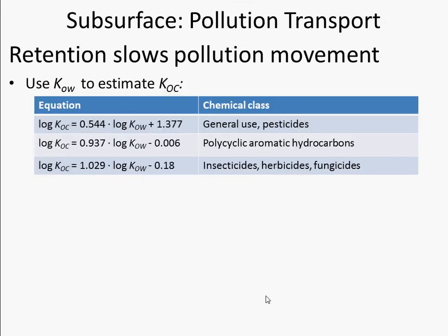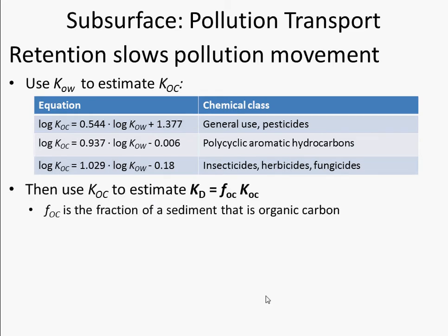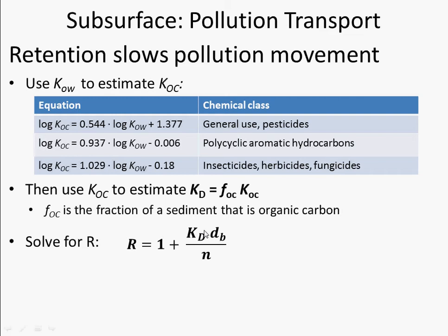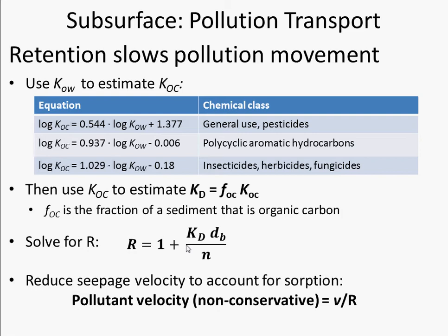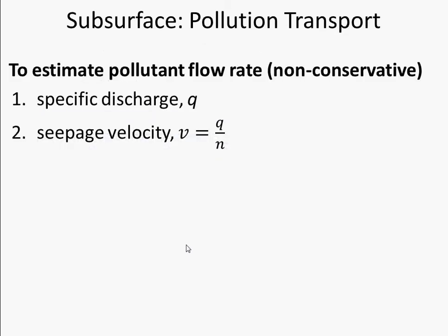First, use kow to estimate koc. Then multiply koc by the fraction of organic carbon in the sediment — for example, a soil with 20% organic carbon has a fraction of 0.2 — to get kd. Put that kd into the equation for r, solve for r, and divide the seepage velocity by r to get the pollutant velocity, which will be slower since we're dealing with a non-conservative chemical that sticks to soil or organic carbon.